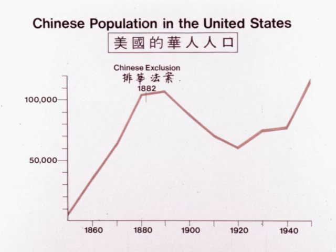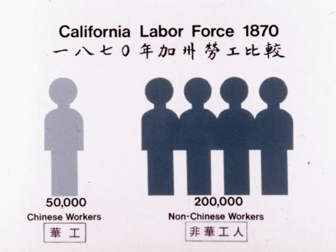Since all the Chinese were able-bodied men, their importance on the labor market was even greater. In 1870, one out of five workers in California was Chinese. Their role in the building of America is a story seldom told.